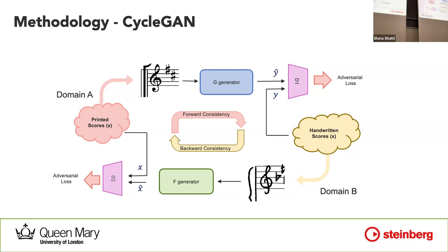As you see here, differently from other models, we have two generators — generator G and generator F — and then we have two discriminators, D1 and D2. We also have more losses than usual: we have adversarial loss, and then we have a cycle consistency loss — a forward loss and a backward consistency loss.